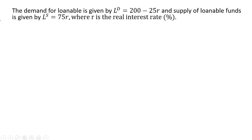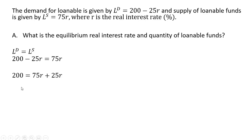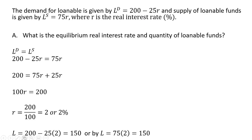Let's do some numerical examples. Here we have the demand for loanable funds and the supply of loanable funds given by equations, where R is the real interest rate. The equilibrium occurs where quantity demanded equals quantity supplied. Setting both equations equal and solving for R — adding 25R to both sides — we get 100R equals 200, and dividing through by 100, the equilibrium real interest rate is 2%. Plugging 2 back into either the demand or supply equation gives an equilibrium quantity of loanable funds of $150.